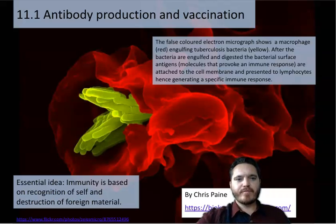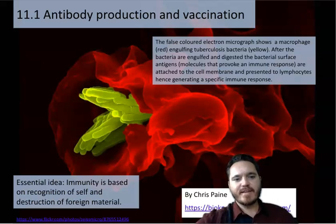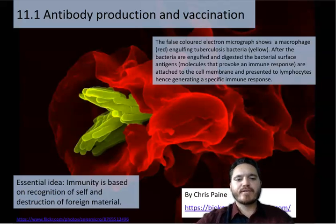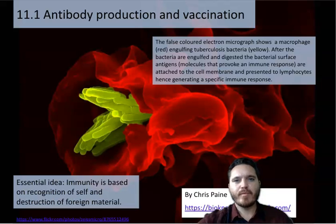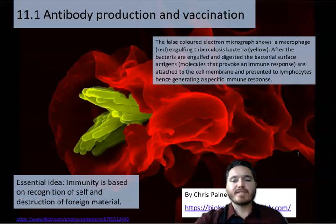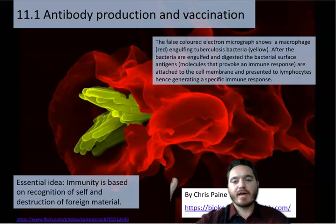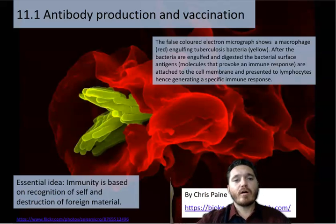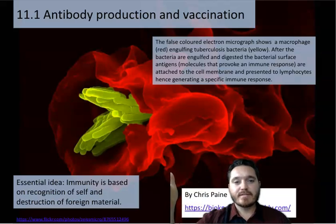Hi everybody, this is a review of subtopic 11.1, antibody production and vaccination. The essential idea here is that immunity is based on recognition of self and destruction of foreign material. This relates to how your body can recognize each cell or thing that enters the body as either being of itself or a foreign substance or cell, which would be recognized as a pathogen.